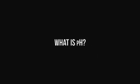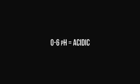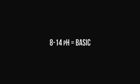pH is a type of scale used to test how basic or acidic a substance is. The H shows the presence of a hydrogen ion. If a substance is 0 to 6 pH, it is considered acidic. If a substance is 8 to 14 pH, it is considered basic or alkaline.